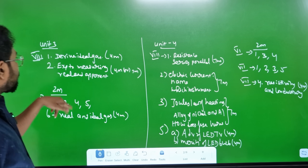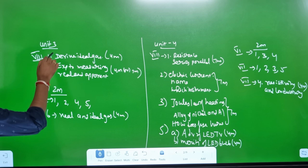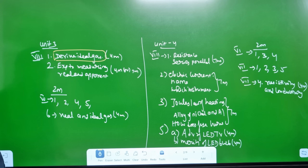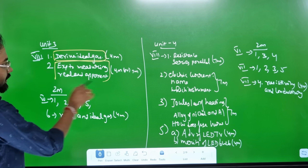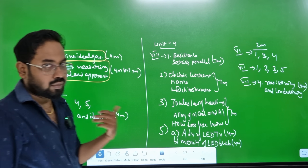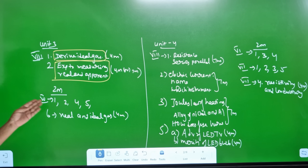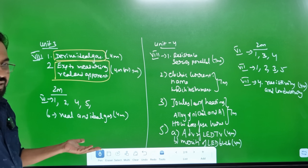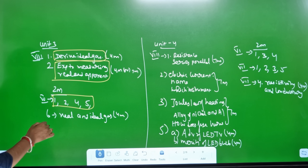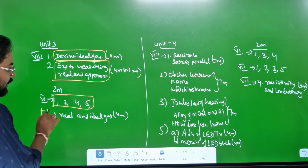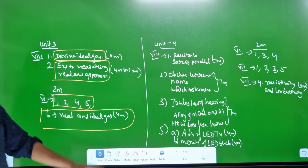In Unit 3, the first question is ideal gas. The next one is the experiment for real and apparent expression. So in physics, we can do biological compromises. If you look at 2 marks - 1, 2, 4, 5 are easy. Calorie, Boyle's, Charles. Real gas and ideal gas is 4 marks. This lesson is 10 units.